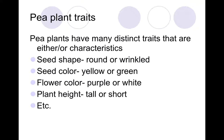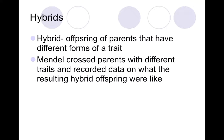When you look at peas, usually the seed shape is round but they can be wrinkled; color is usually green but can be yellow; flower color is usually purple but can be white; and plant height is usually tall but can be short. The round, green, purple, and tall are the dominant traits because those are the ones seen most often. The offspring of parents that have different forms of traits is called a hybrid. Mendel crossed parents with different traits — like tall and short — and recorded data on what the resulting hybrid offspring would be like.